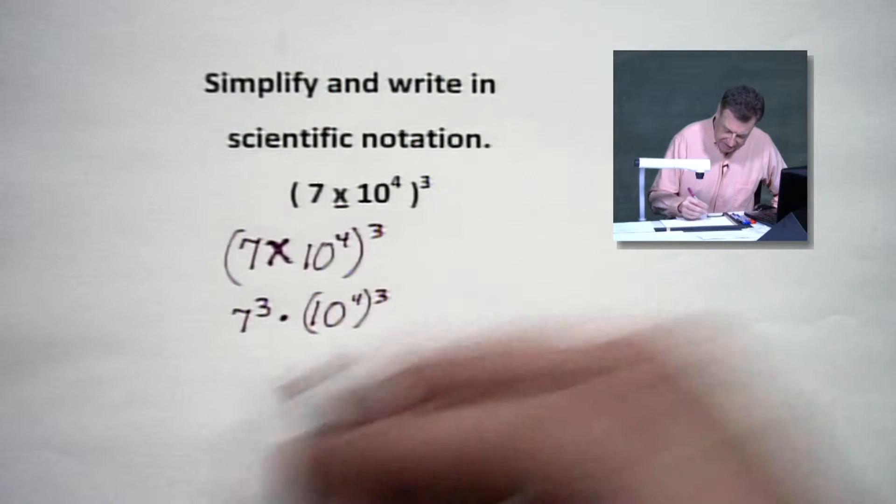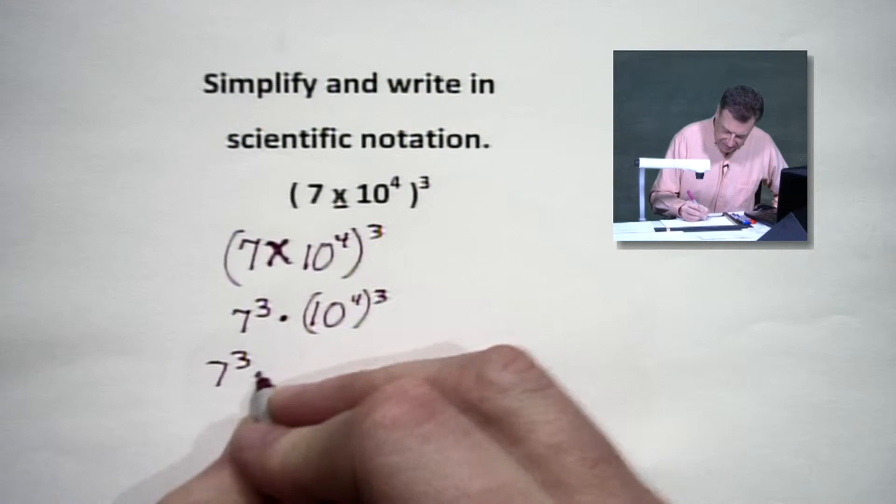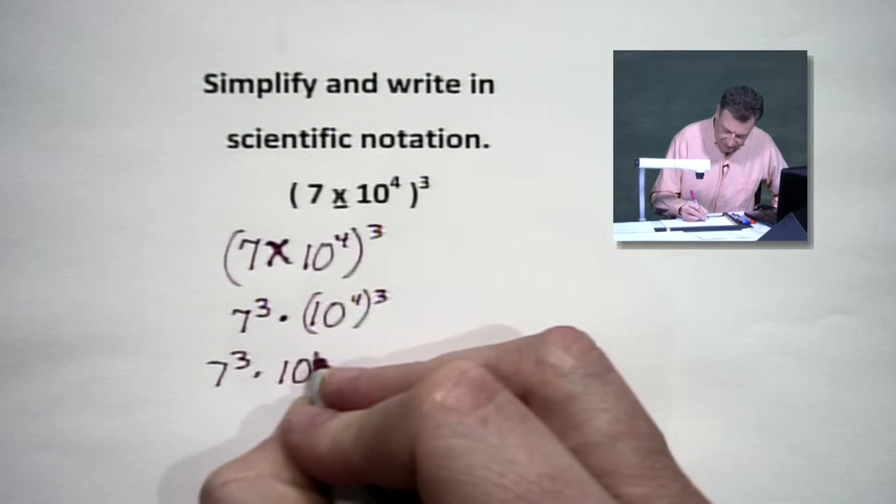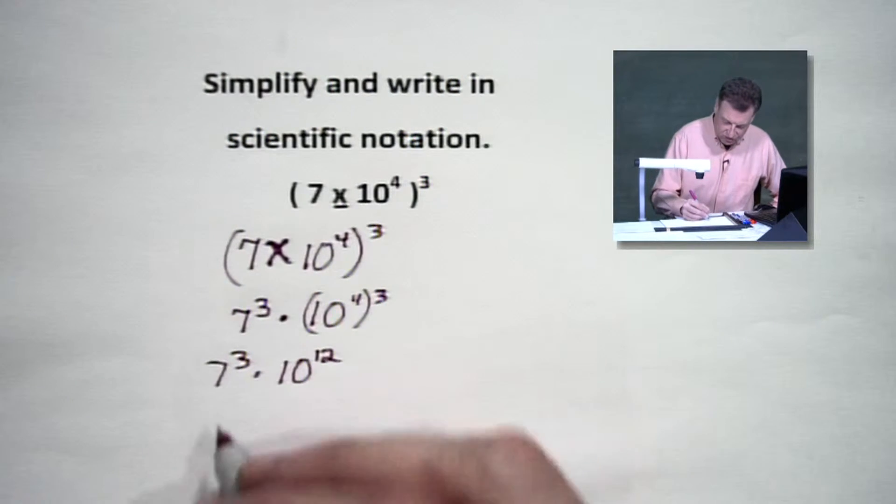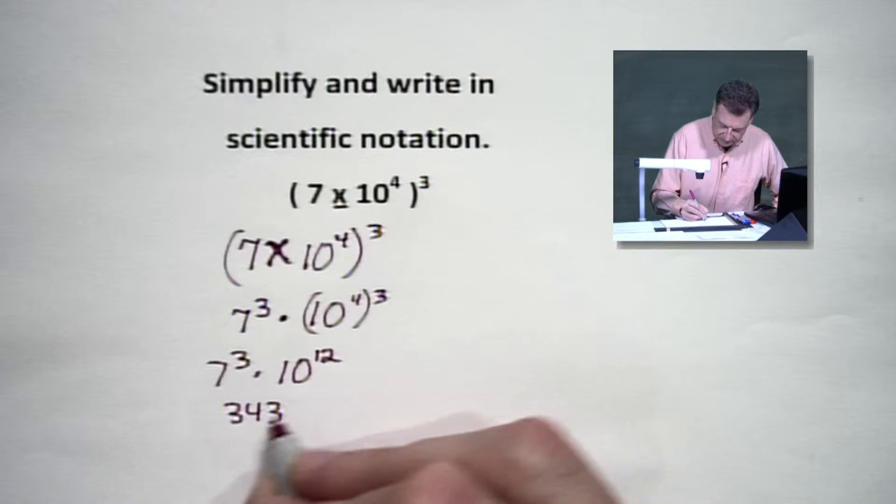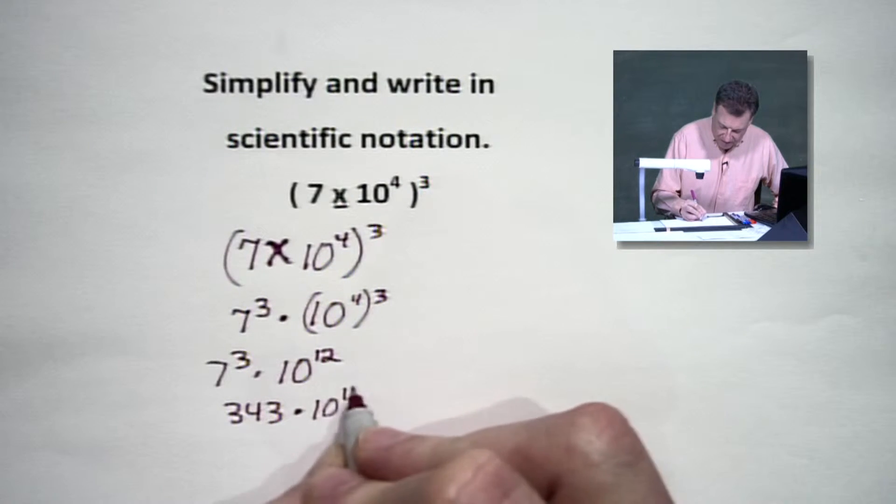So here's where we are. We're at seven to the third times ten to the twelfth power. Let's check out what seven to the third is. That's going to give us 343 times our ten to the twelfth power.